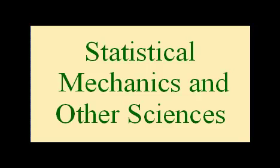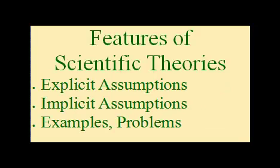The basis of our analysis is the thinking of Thomas Kuhn, the great scientific philosopher of the 20th century, and in particular his belief that most scientific theories have three basic features. They have explicit assumptions, which we call laws of nature, and implicit assumptions, which are in fact equally fundamental laws of nature but, for various reasons — often historical — are not called laws of nature.